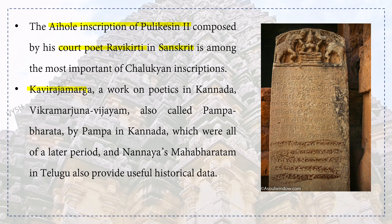Kavi Raja Marga, a work on poetics in Kannada, Vikramarjuna Vijayam also called as Pampa Bharata by Pampa in Kannada, and Nannaya's Mahabharatam in Telugu — which were all of a later period — also provided useful historical data. So Kavi Raja Marga in Kannada, Vikramarjuna Vijayam in Kannada, and Nannaya's Mahabharatam in Telugu are very important sources.